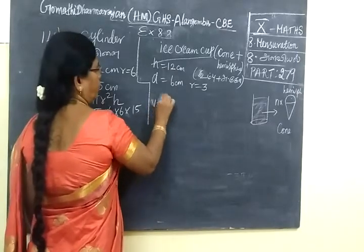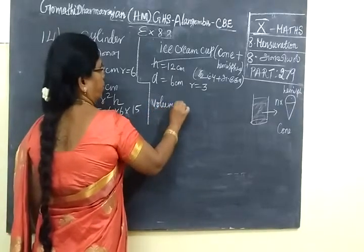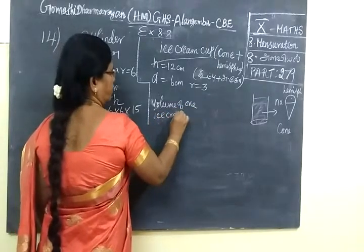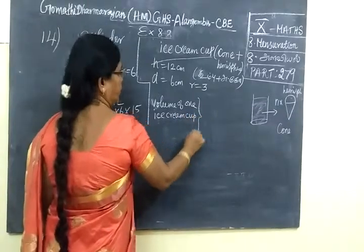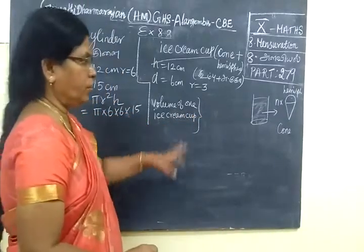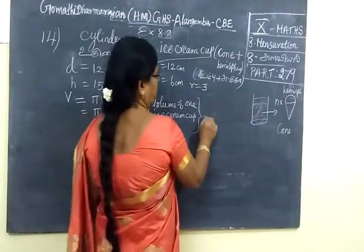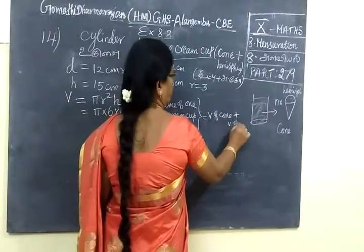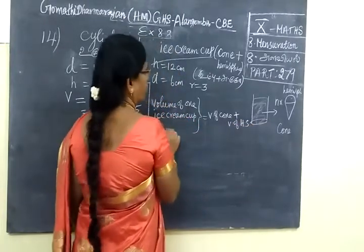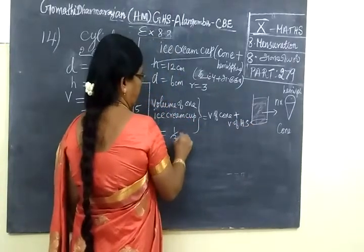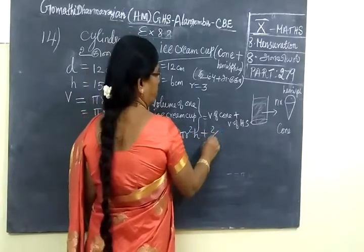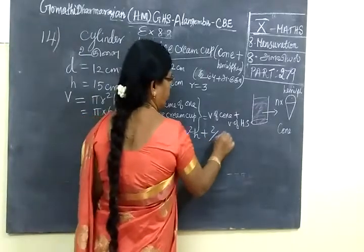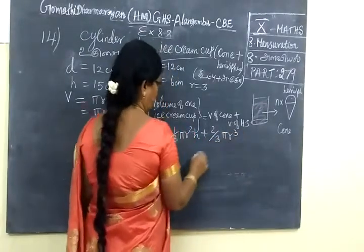First, volume of one ice cream cup. For the ice cream cup, we have two parts: volume of cone plus volume of hemisphere. Volume of cone is 1/3 π r² h. Volume of hemisphere is 2/3 π r³.